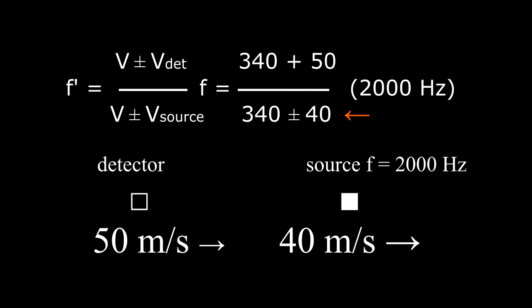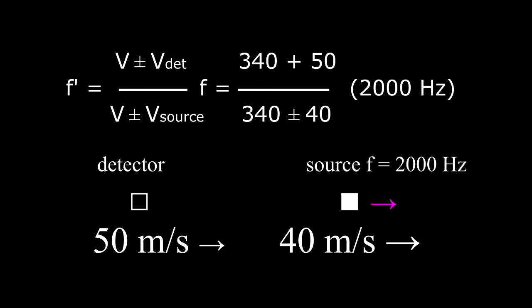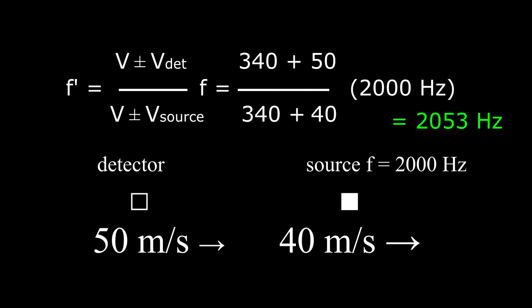Next look at the denominator, which contains the velocity of the source. The source is trying to move away from the detector and this will decrease f prime. So we choose the plus sign in the denominator to make the ratio smaller. The Doppler shifted frequency f prime is 2053 hertz.